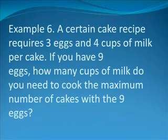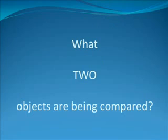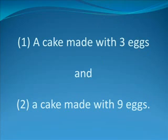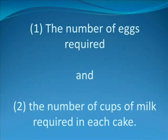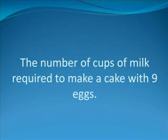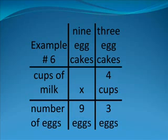Example six: A certain cake recipe requires three eggs and four cups of milk per cake. If you have nine eggs, how many cups of milk do you need to cook the maximum number of cakes with the nine eggs? What objects are being compared? A cake made with three eggs and a cake made with nine eggs. What characteristics are being compared? The number of eggs required and the number of cups of milk required in each cake. What is the unknown? The number of cups of milk required to make a cake with nine eggs.